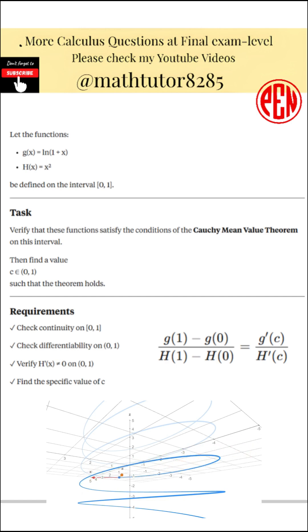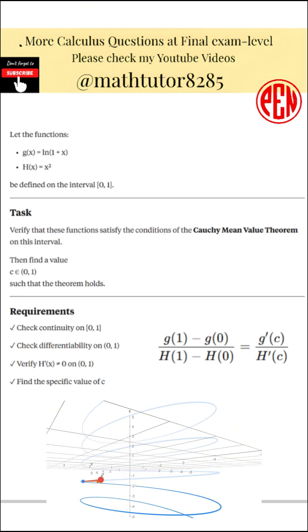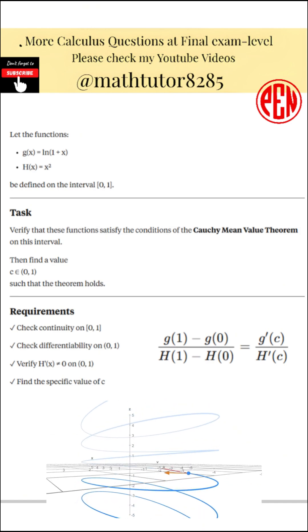Let the function g of x be the natural logarithm of 1 plus x, and let the function h of x be x squared. Consider the closed interval from 0 to 1. Please verify that both functions satisfy the conditions of the Cauchy-Mean Value Theorem on this interval. Then find a value c between 0 and 1 such that the difference in values of g at 1 and 0 divided by the difference in values of h at 1 and 0 is equal to the derivative of g at c divided by the derivative of h at c.